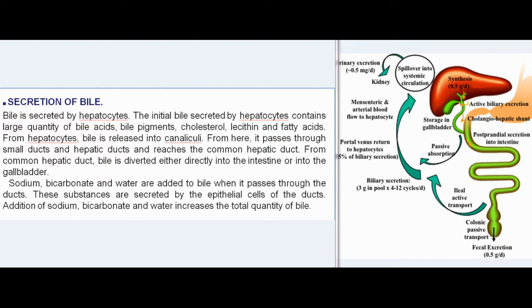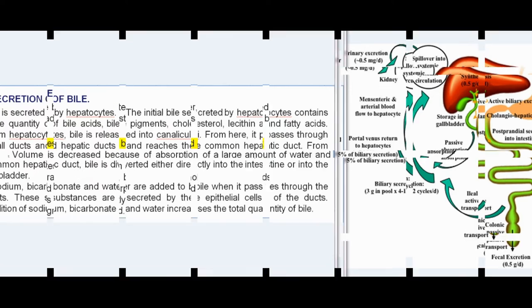Sodium, bicarbonate, and water are added to bile when it passes through the ducts. These substances are secreted by the epithelial cells of the ducts. Addition of sodium, bicarbonate, and water increases the total quantity of bile.